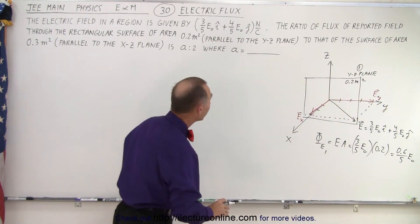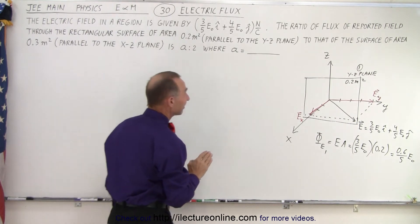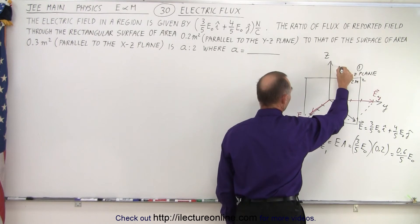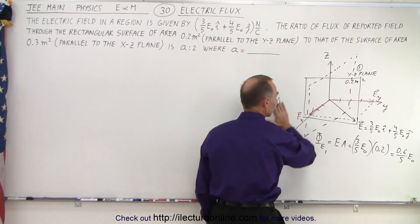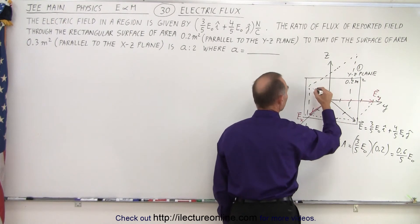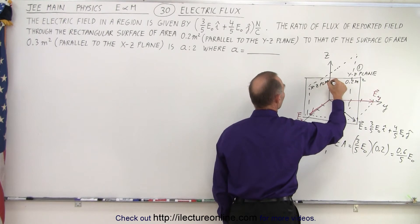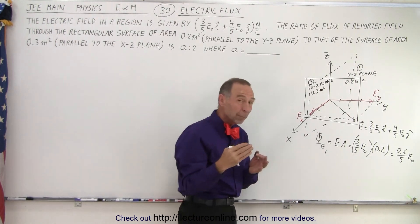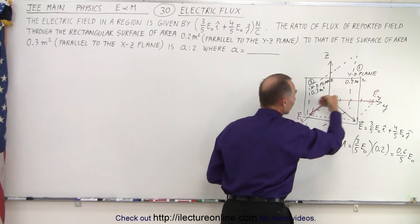Now, the second plane is 0.3 square meters, and it's parallel to the X-Z plane. So it would be in this direction right here. So that would be this plane right here. Like that. So it's in the X-Z plane. So it would be the X-Z plane like this. This is area number 2, and it's 0.3 meters squared.